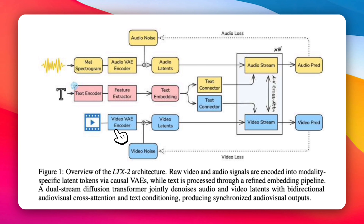The video side works the same way. Raw video frames go into a video VAE encoder, which compresses space and time into video latents. This is how LTX2 can handle motion, identity, and long sequences without blowing up your compute. Audio and video are separate but comparable — both live in latent space before generation. Text goes through its own pipeline; instead of just taking a single text embedding, LTX2 extracts features across multiple layers of a large language model, producing a much richer text representation — especially important for speech, emotion, and timing. These text embeddings are then fed into both the audio and video streams.